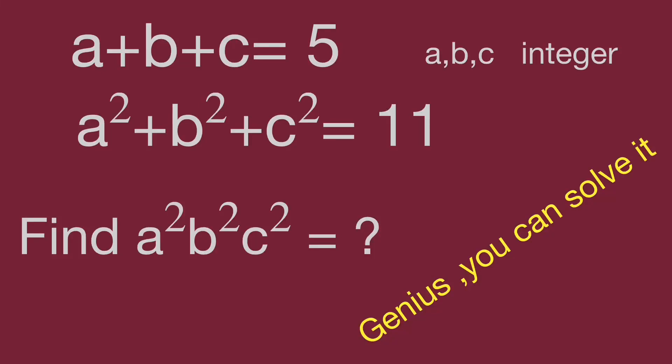Hello, you are watching Bala Hippo math genius riddle. The question is: a plus b plus c equals 5, a squared plus b squared plus c squared equals 11, and a, b, c are integers. Find the value of a squared times b squared times c squared. Can you find the value? Pause the video and give yourself a try. When you are ready, keep watching the video to find the result.